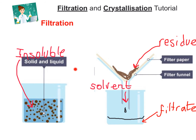The insoluble solid and its liquid mixture are poured through the filter paper. The liquid — the solvent — and any soluble substances that may be found in this mixture pass through those tiny holes in the filter paper with no problem. They drip through the bottom into the beaker and form something called the filtrate.